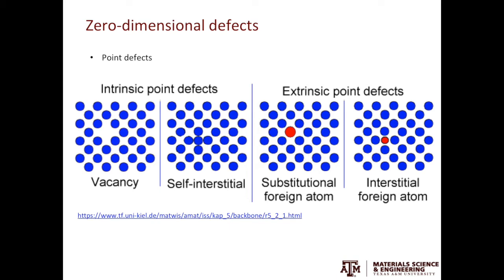In the second case, you can have foreign atoms present in the material. They're usually called alloying elements or dopants. If you replace a host atom with the foreign atom, it is called a substitutional foreign atom. You can also have the foreign atom much smaller than the host atoms, so they can fill in the gaps — this is called an interstitial foreign atom.